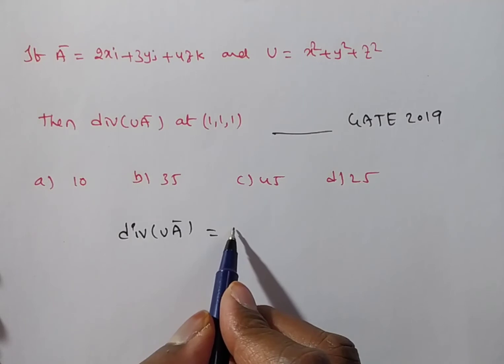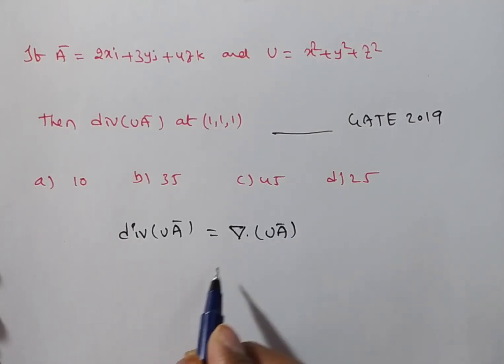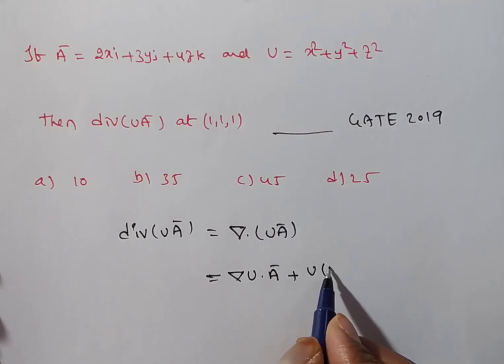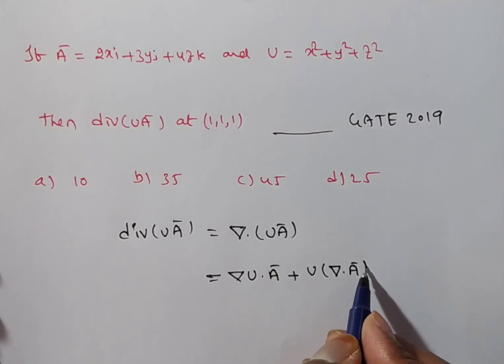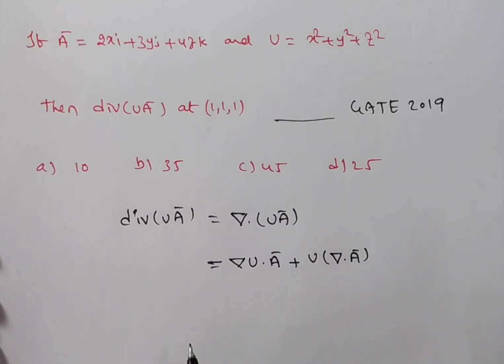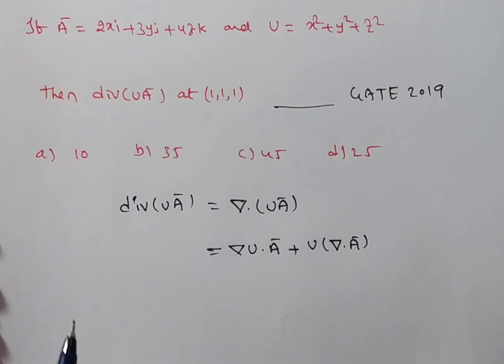Divergence of u a bar you can write as symbolically del dot u a bar. Now, if you apply the operator vector differential operator, you will have del u dot a bar plus u into del dot a bar. So, if you want to find out this, find out this one and this one and add these two. That is enough. Where you need to find out this one? At the point 1 comma 1 comma 1.